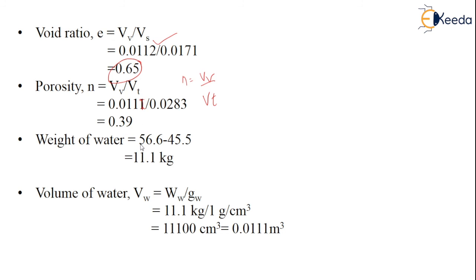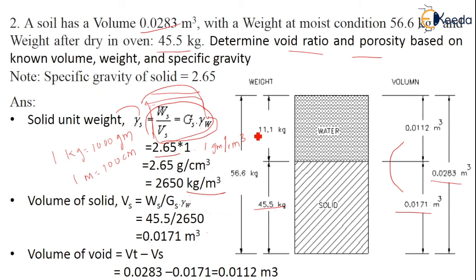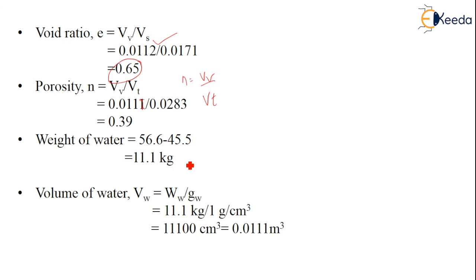The weight of water is calculated from total weight minus weight of solids: 56.6 kg minus 45.5 kg equals 11.1 kg. The volume of water Vw equals weight of water divided by the unit weight of water: 11.1 kg divided by 1000 kg/m³ gives a volume of water of 0.0111 m³. This is an important type of problem which may be given in the examination. Thank you.